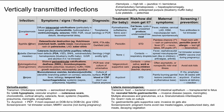Let's start with toxoplasmosis. This presents with diffuse intracranial calcifications — it's important to differentiate these from the bilateral periventricular calcifications of cytomegalovirus. Toxoplasmosis also has chorioretinitis and ventriculomegaly or hydrocephalus. This is the classic triad for congenital toxoplasmosis.